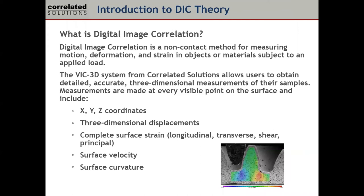Adding a time variable to the image sequence allows us to calculate velocity, compute accelerations, and derive surface curvature — essentially the localized inverse of the radius. You can also enter custom equations to compute your own variables from the DIC output. Essentially, we gather data very similar to what theoretical models provide, enabling validation of finite element models with full-field measurements that look just like your FEA output — something strain gauges and extensometers alone cannot provide.